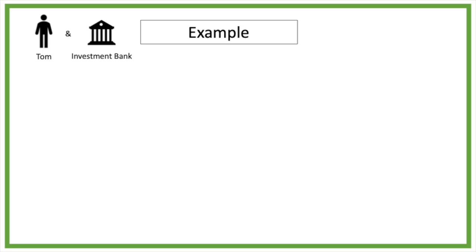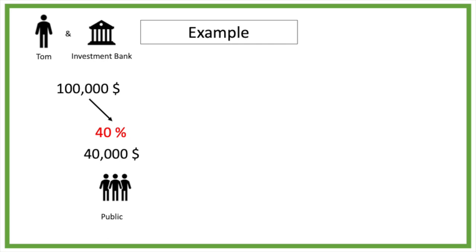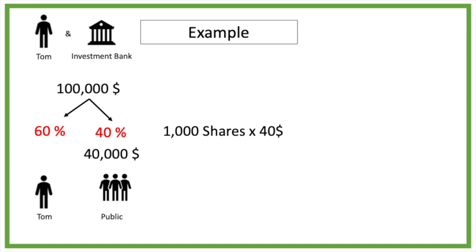Tom and the investment bank determine the value of the company at $100,000. Tom decides to sell 40% to the public investors, which means $40,000 will be issued in stocks. This means that Tom will now only own 60% of the company and investors 40%. Tom and the investment bank decide to issue 1,000 shares with each share having a price of $40. These shares can be bought on the stock market by the public investors. This is the IPO as it's an initial public offering. In the future the company can decide to issue extra stocks to raise more money, but this is not called an IPO anymore as it's already a public company.